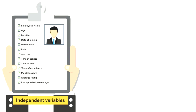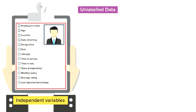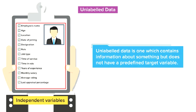Had this information not been present in the data, we would have classified it as unlabeled data. So, unlabeled data is one which contains information about something but does not have a predefined target variable — it is actually just the opposite of labeled data. In case you are wondering what kind of data that may be or what could be its use, we would understand that right after we learn about supervised learning.